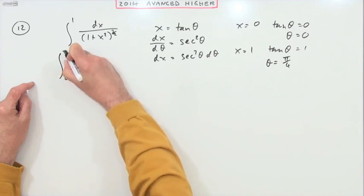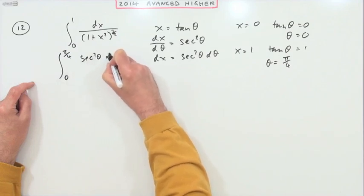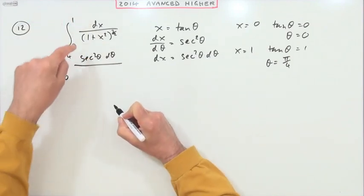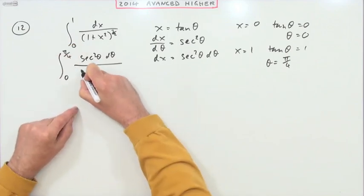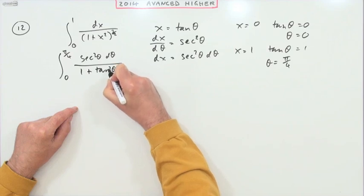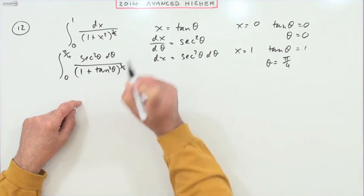Let's start filling this in then. So that was 0 to π upon 4, the dx was sec squared θ dθ, the 1 plus x squared will become 1 plus tan θ squared, and that's all to the power 3 upon 2.